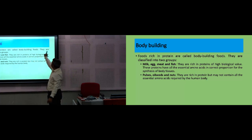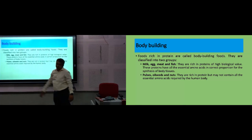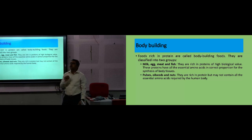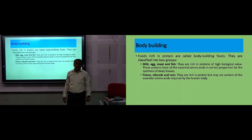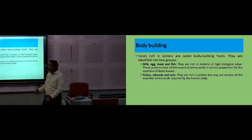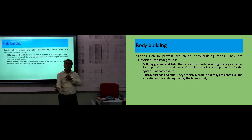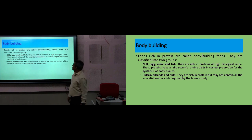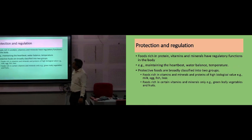Body-building foods — why do you require body-building food? Protein is the only source for body building. Body-building foods are classified into two groups: milk, meat, and fish for non-vegetarians, and pulses for vegetarians. All legumes, pulses, or dal are rich in protein — up to 24 to 26 percent. Oil seeds such as groundnut and soybean are also rich in protein, but may not contain all essential amino acids. That is why we eat cereals with pulses — cereals are deficient in lysine whereas pulses are deficient in methionine.